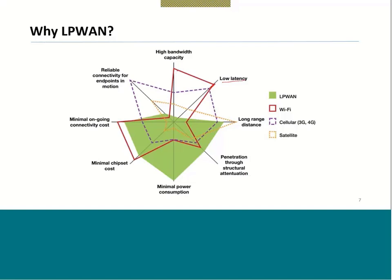Wi-Fi provides very high bandwidth. Cellular 3G/4G speed is less, but 5G will dramatically increase it. Looking at power consumption, LPWAN is the most efficient technology — minimal power consumption compared to all other technologies. There are many LPWAN standards that are really interesting to examine.